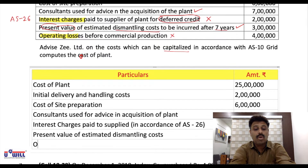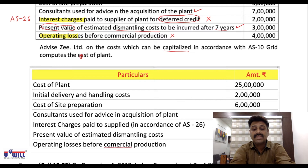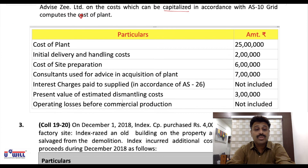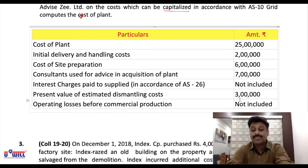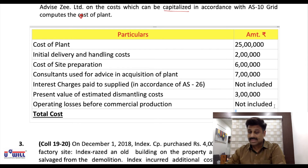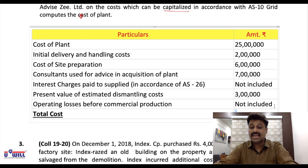Operating losses before commercial production are not to be included — nil. Total cost: 25 lakhs plus 2 lakhs plus 6 lakhs plus 7 lakhs plus 3 lakhs equals 43 lakhs. So 43 lakhs will be the total cost of the plant.